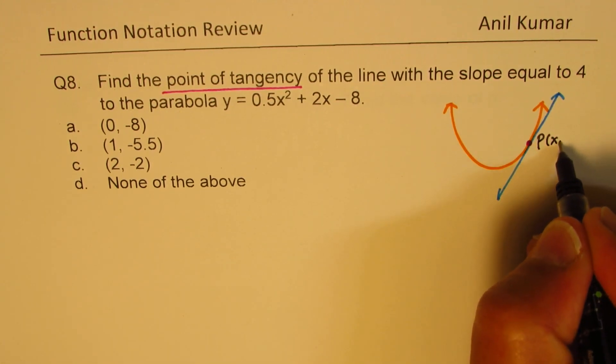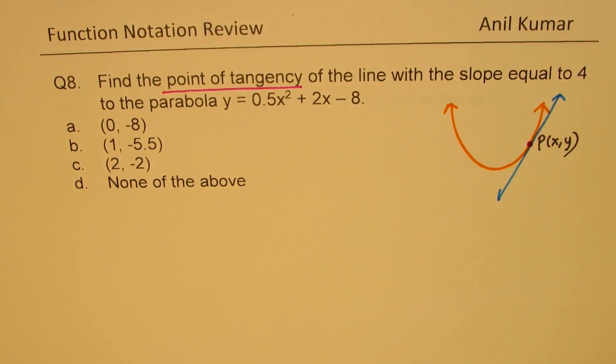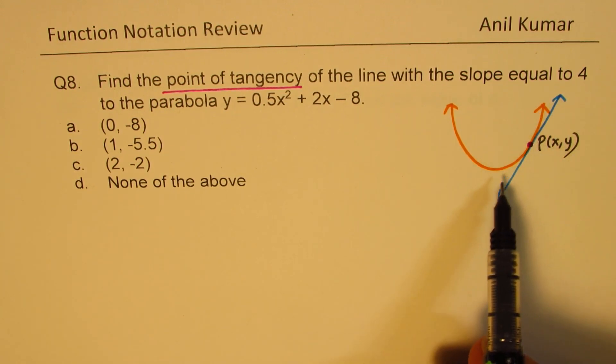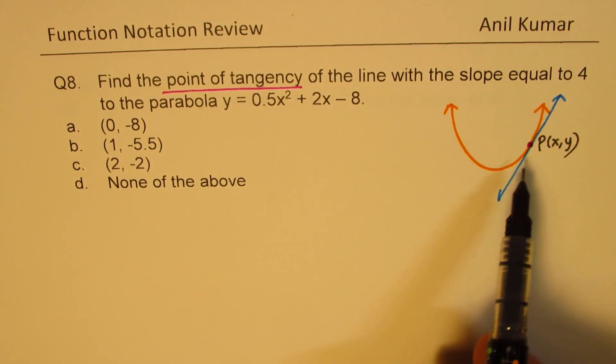When we say find the point of tangency, it means this particular point where this line is tangent. That's what we need to find. So let this point be (x, y). The point lies on the line and also on the parabola, and it intersects only at one point.